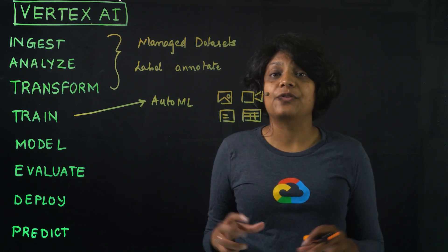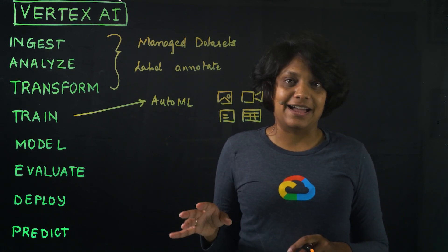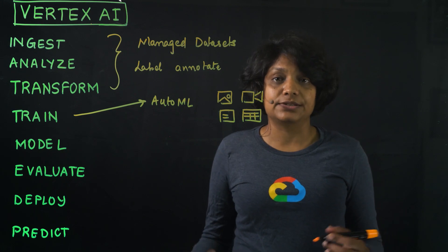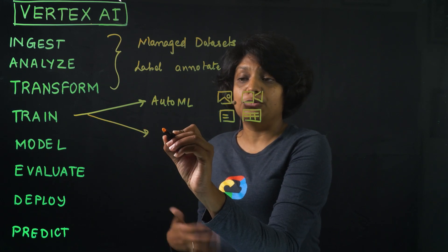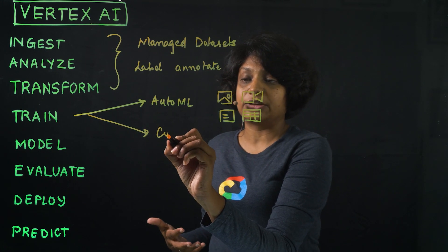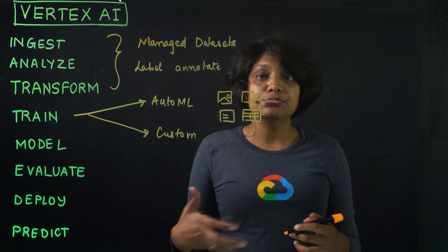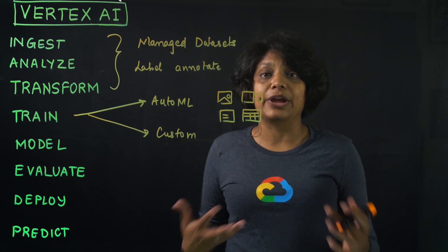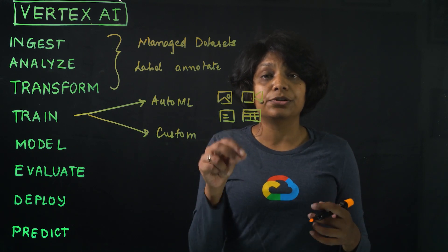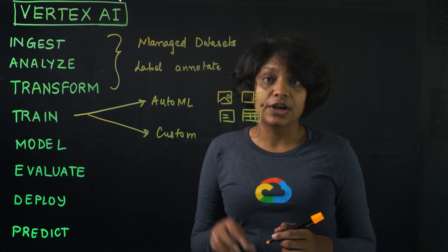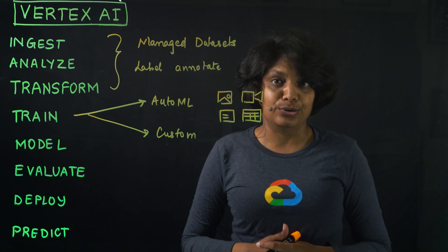Vertex AI will take care of finding the best model for that task. And for other use cases where you would like more control over your model's architecture, use Custom Models. Custom Models are great for frameworks and architectures and code that you want to write yourself, so this works great for TensorFlow or PyTorch code.